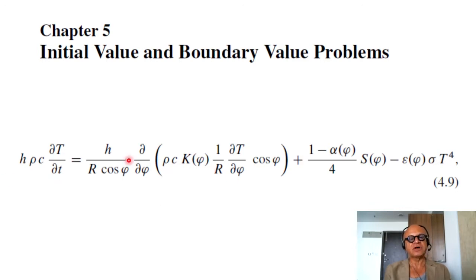So we had written this heat equation for the atmosphere. We had averaged out in the horizontal directions, and we were taking a vertical column of air averaged. So H can be represented by a scale height of 8.2 kilometers or so. Density of the air, heat capacity times the time derivative of temperature was given by H divided by R cosine phi.